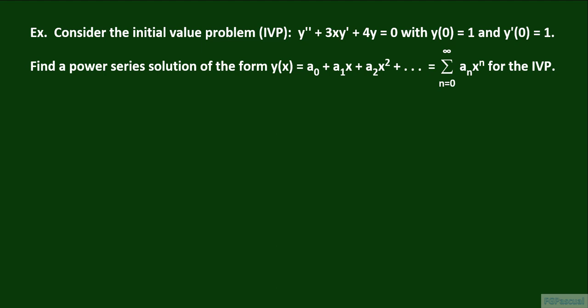In this lecture, we consider the initial value problem: y double prime plus 3x y prime plus 4y equals 0, with the initial conditions y of 0 equals 1 and y prime of 0 equals 1.